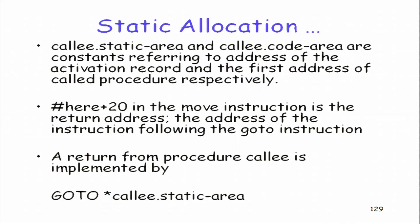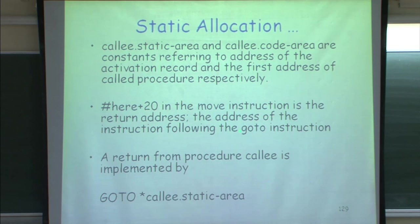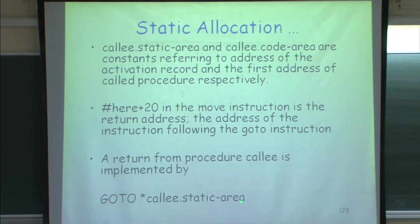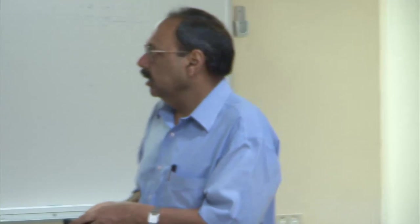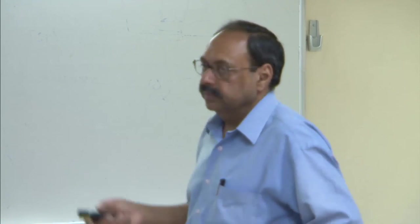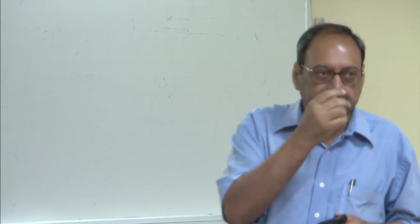The call static area and call code area are constants which refer to the address of the activation record and the procedure code area respectively. Here plus 20 in the move instruction gives the return address — the address of the instruction following the call. Return from a procedure is implemented as 'goto the indirect call static area', where the star operation means jump to the location whose address is stored in that particular location.